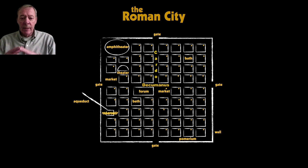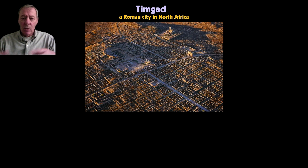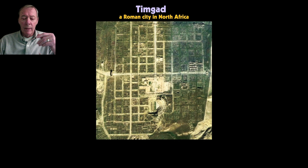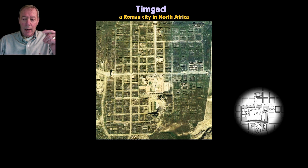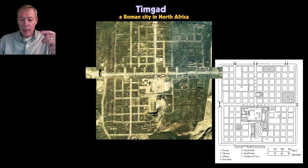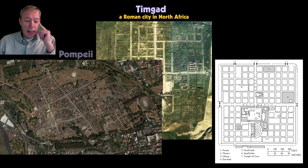Here is an actual Roman city called Timgad, located in North Africa. It's a very interesting example of a Roman city built from the ground up to accommodate retired legionaries settled in North Africa. From a Google Earth perspective and the diagram, we can see all the typical elements clearly: the cardo running one direction, the decumanus intersecting it, and the forum at the center of the city.